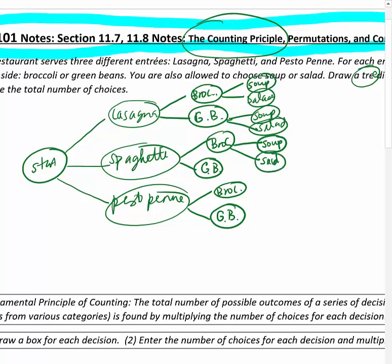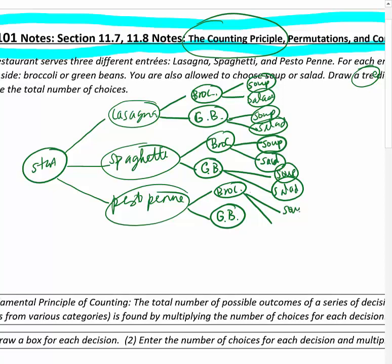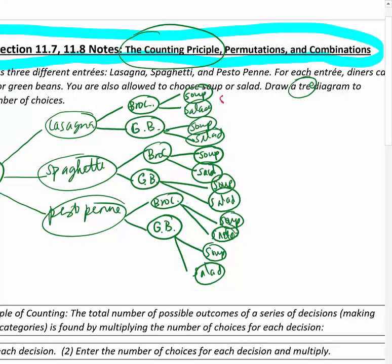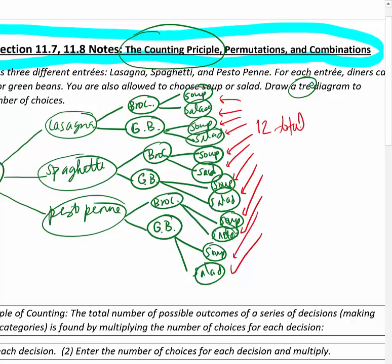For spaghetti and broccoli, spaghetti and green beans, you can have soup or salad. And then pesto penne and broccoli, and pesto penne and green beans - each can have soup or salad. That means you can count the number of branches at the very end to see how many choices there are total: 1, 2, 3, 4, 5, 6, 7, 8, 9, 10, 11, 12. So there are 12 total choices.